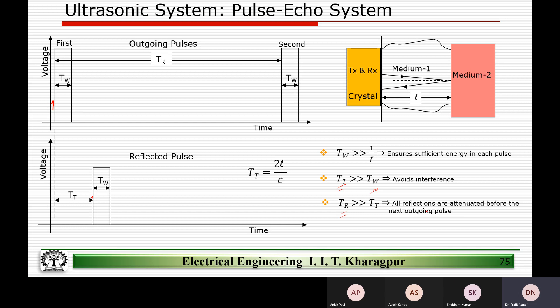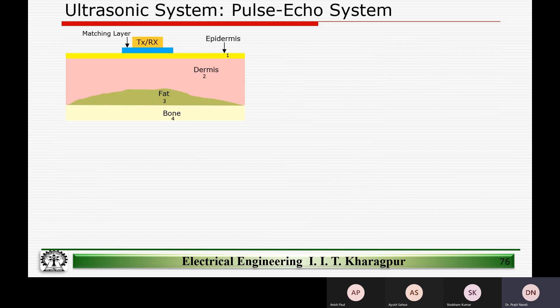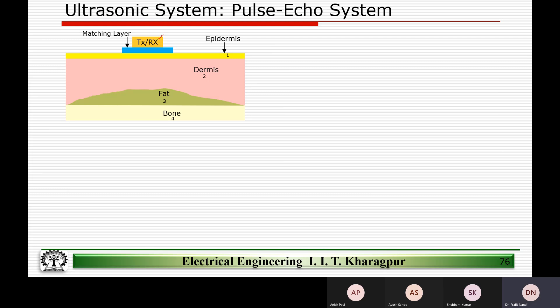This is simple to understand if you look at this slide — you should be able to gather why these key constraints are taken into picture. Now let's look at an ultrasound pulse ecosystem which the doctors use. If you go to a clinic, you must have seen an ultrasonic system. We have a piezoelectric crystal which can work as a transmitter and a receiver, both.